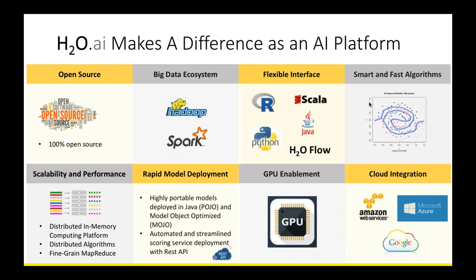Looking at the platform as a whole — key features to take home: H2O is 100% open source with no vendor lock-in; you can download it today or go to a cloud platform like Azure and get started right away. It's built for the big data ecosystem and plays nicely with all Hadoop and Spark distributions. It has a very flexible interface through R, Python, Scala, Java, or H2O Flow.